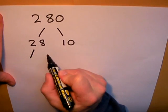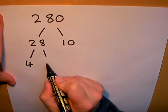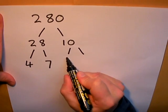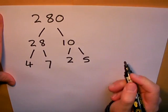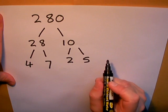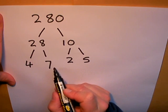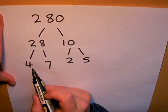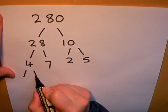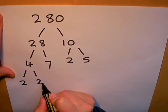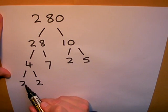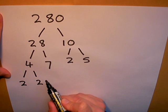28 can be made up of 4 multiplied by 7, and 10 can be broken up into 2 times 5. Now I've got some prime numbers here. 5, 2, and 7 are all prime numbers. They cannot be split up any further. But 4 can be. So I need to take 4 a bit further. 2 times 2 makes 4.